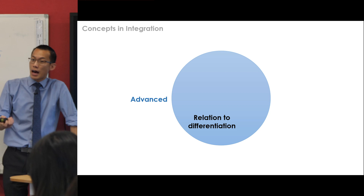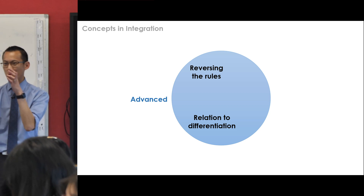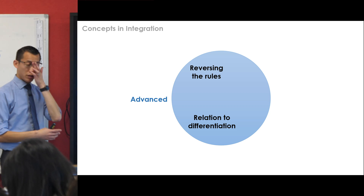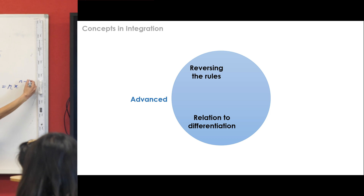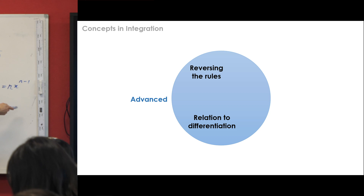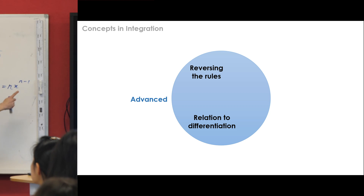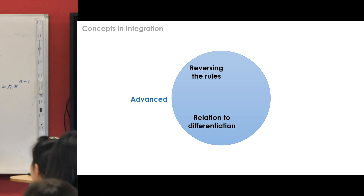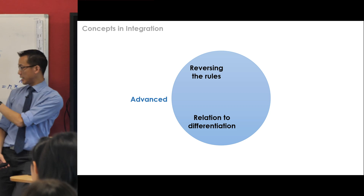The lion's share of everything you know about integration you know from differentiating first. We spent a while taking all those rules of differentiation and turning them into integration rules. For example, the derivative of a polynomial term is n times x to the n minus 1 — you multiply by the index and reduce the index by 1. To turn this into an integration rule, you do these same two things reversed: increase the index first, then divide by the new index. We did it with polynomials, trig, and other families of functions.